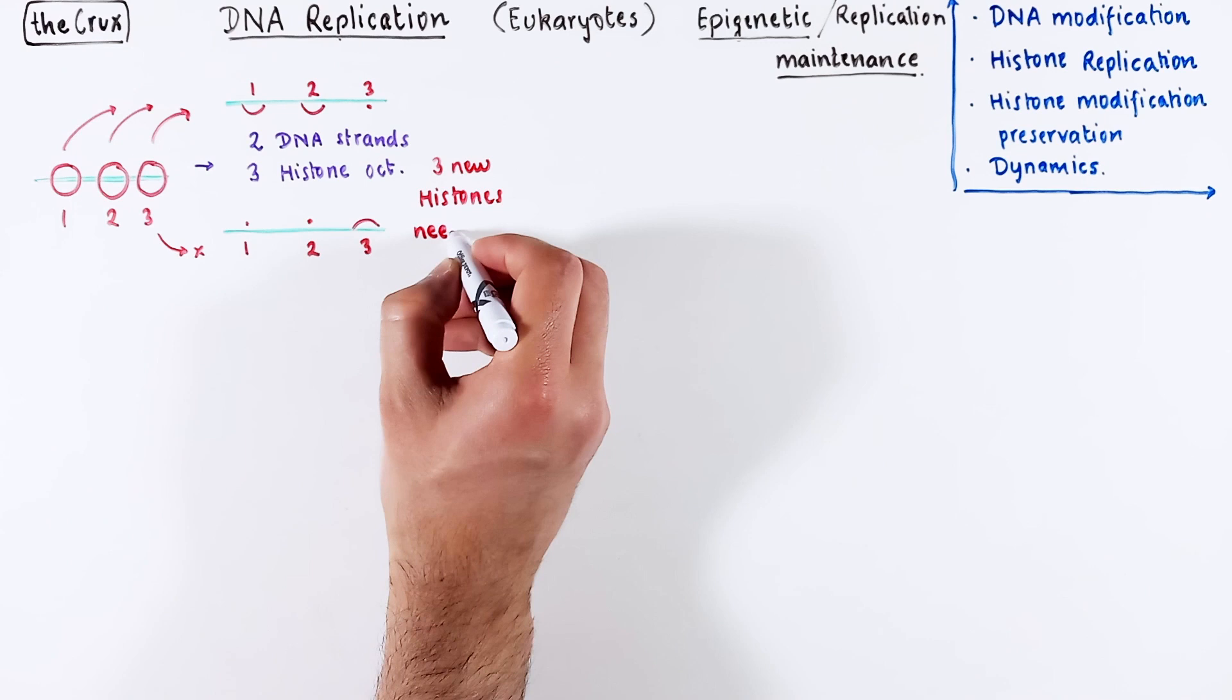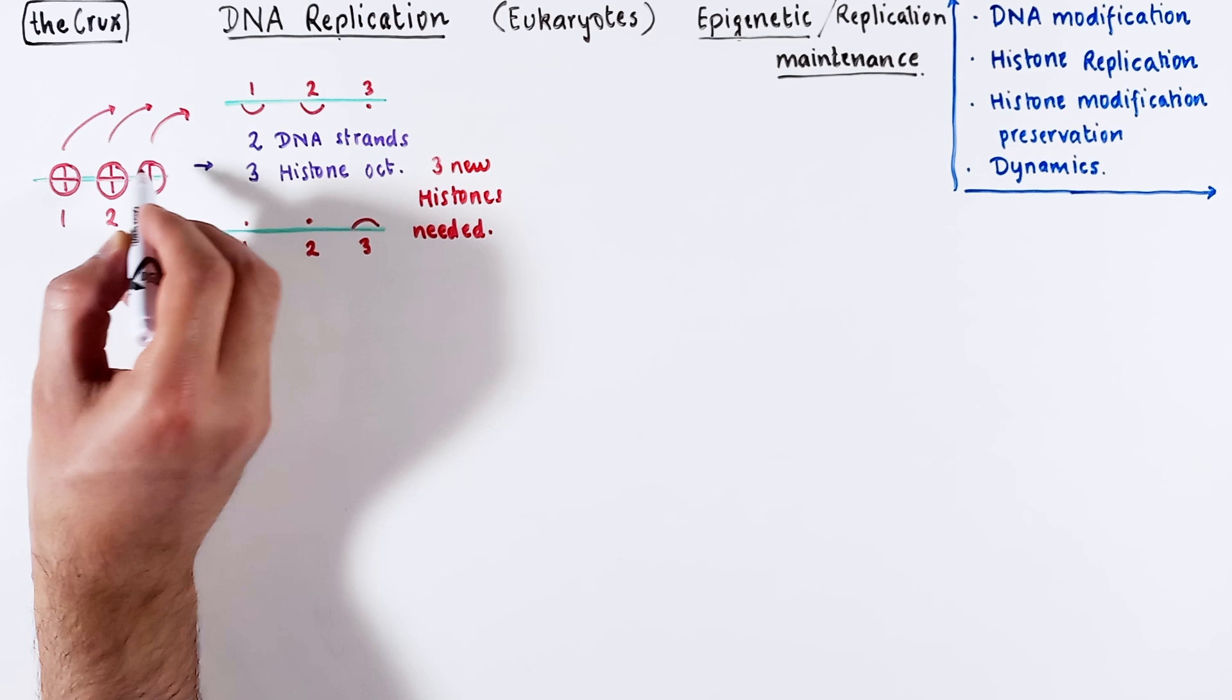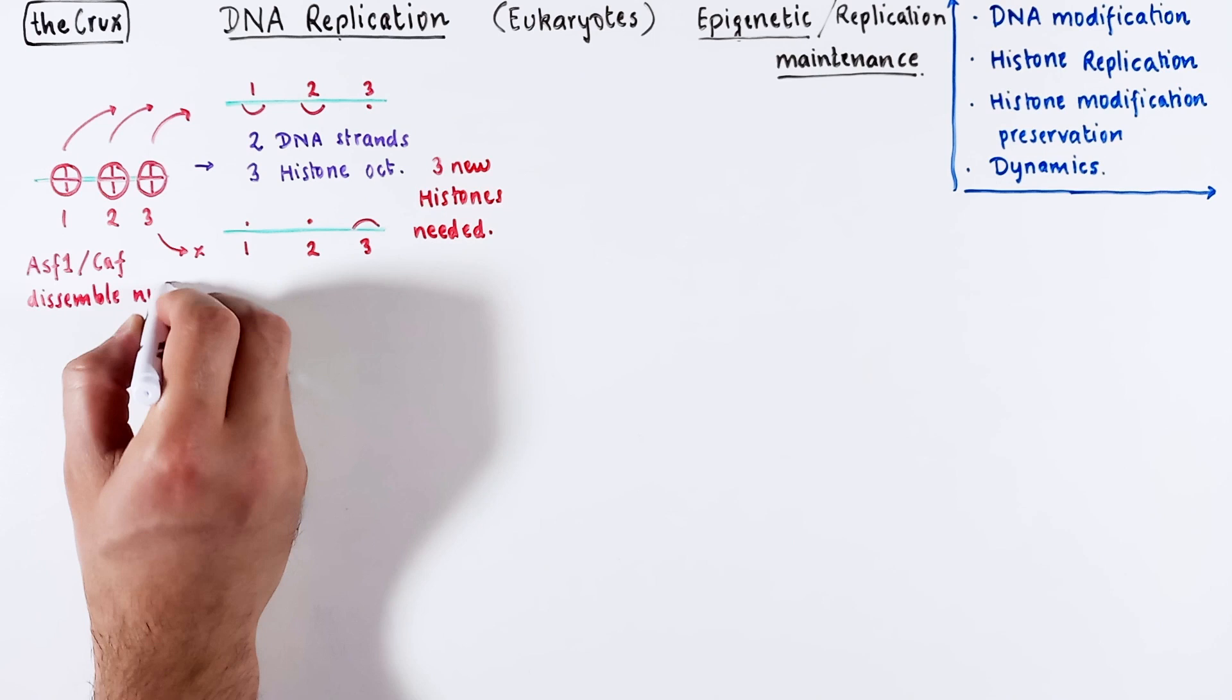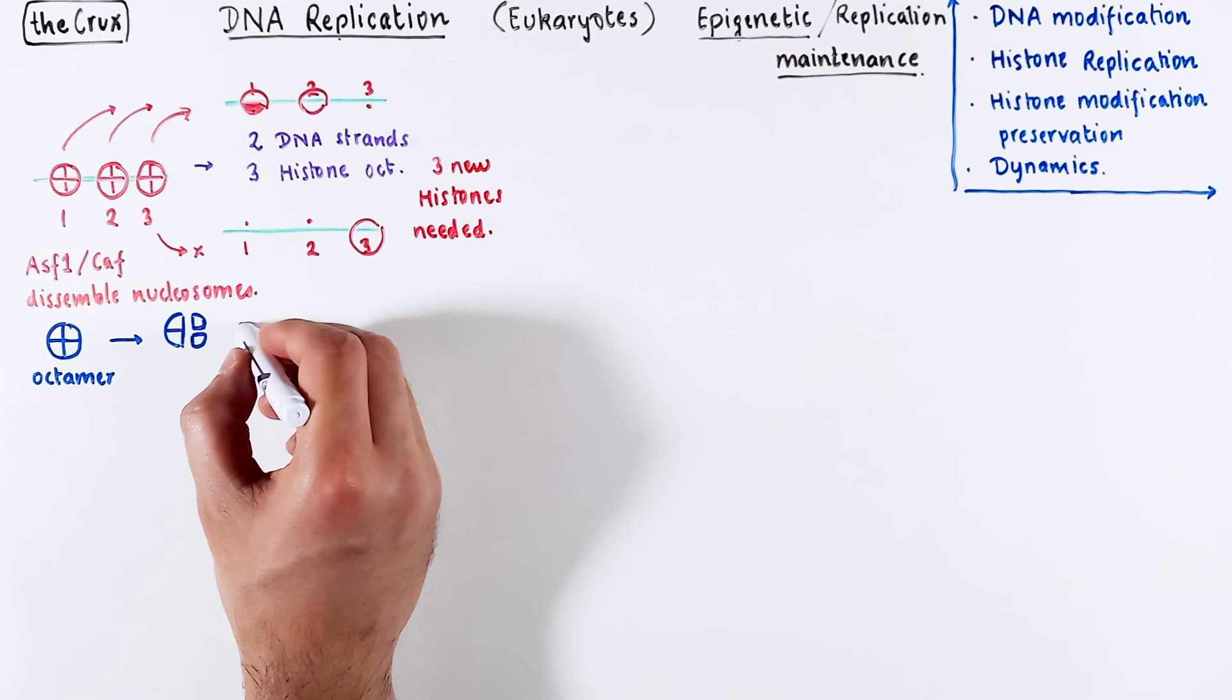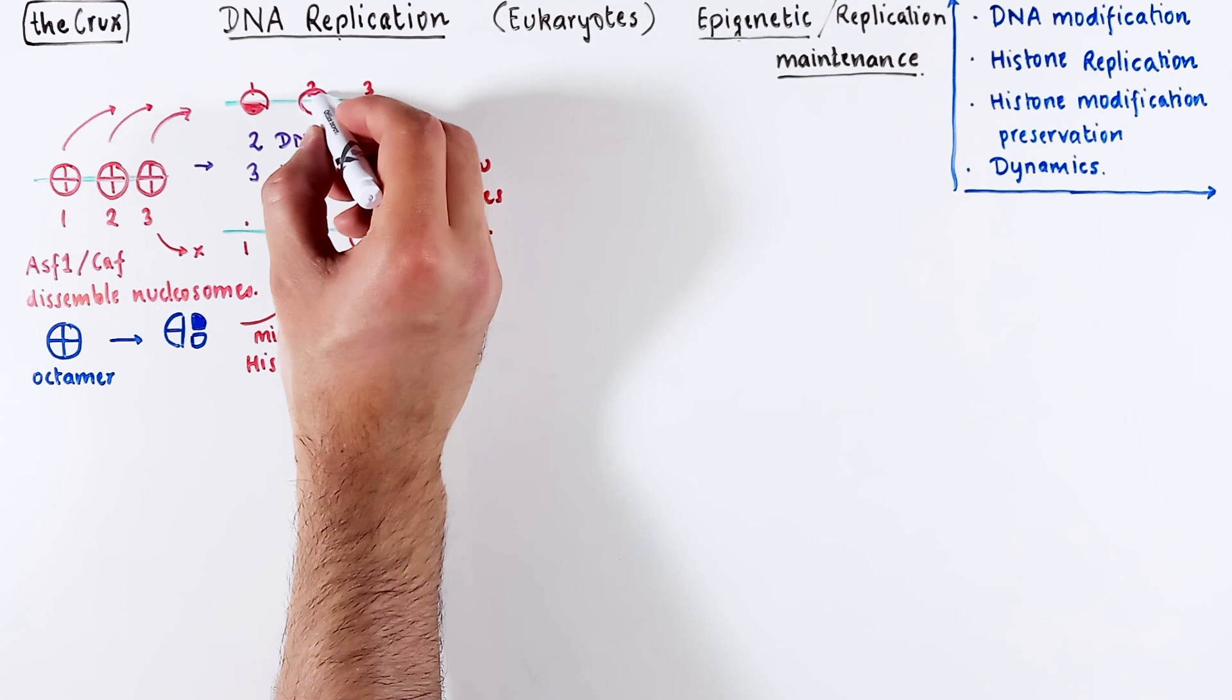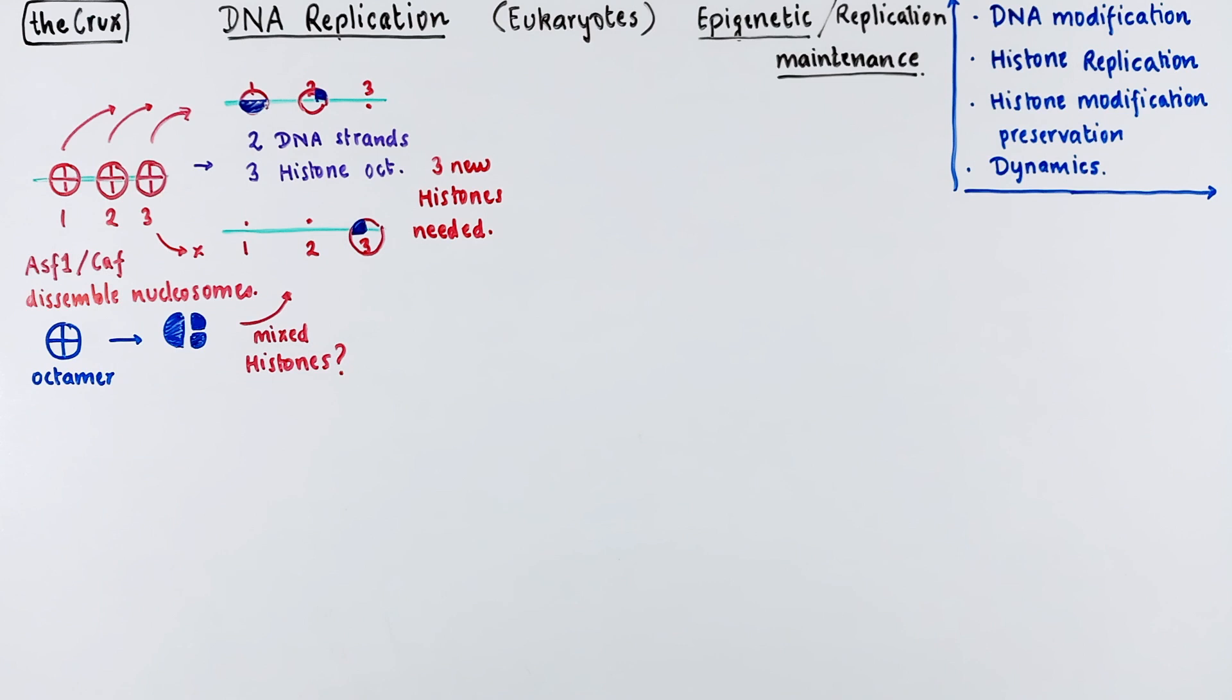Now the problem is a bit more complicated. In our previous discussion on DNA replication, we have seen that ASF1 and CAF remodelers can break the histone octamer into individual histone units. So if we talk about the distribution of these histones, you can get a mix of these histone pieces. Maybe this one piece goes to this octamer, this another one goes here, and this tiny bit ends up here. Is this how it works? We will discuss the answers to this later in the video.